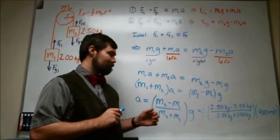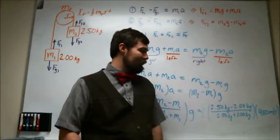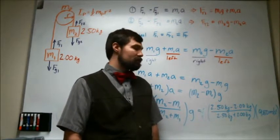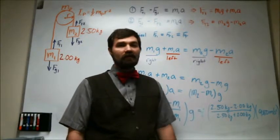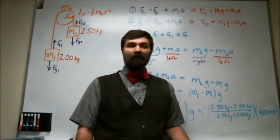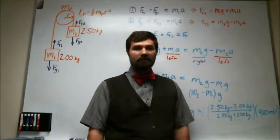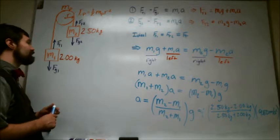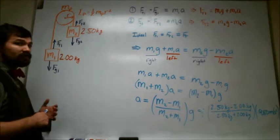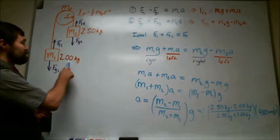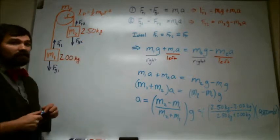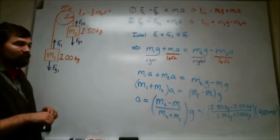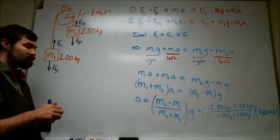So this top part then is 0.5 kg, the bottom part is 4.5 kg, so basically one-ninth of g, and that ends up being about 1.09 meters per second squared. So in the ideal case with the ideal pulley and the massless frictionless string, we end up getting an acceleration of 1.09 meters per second squared.